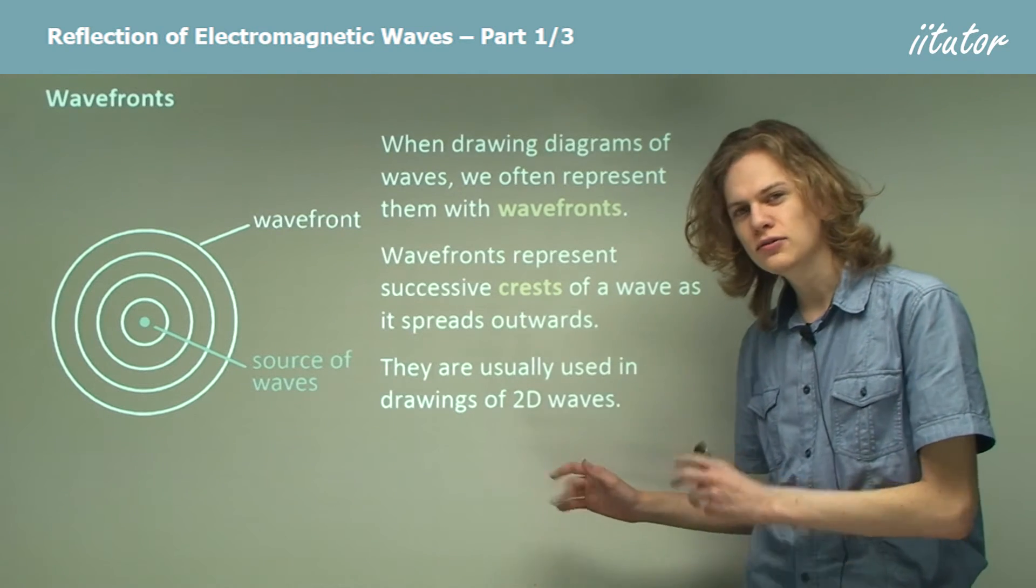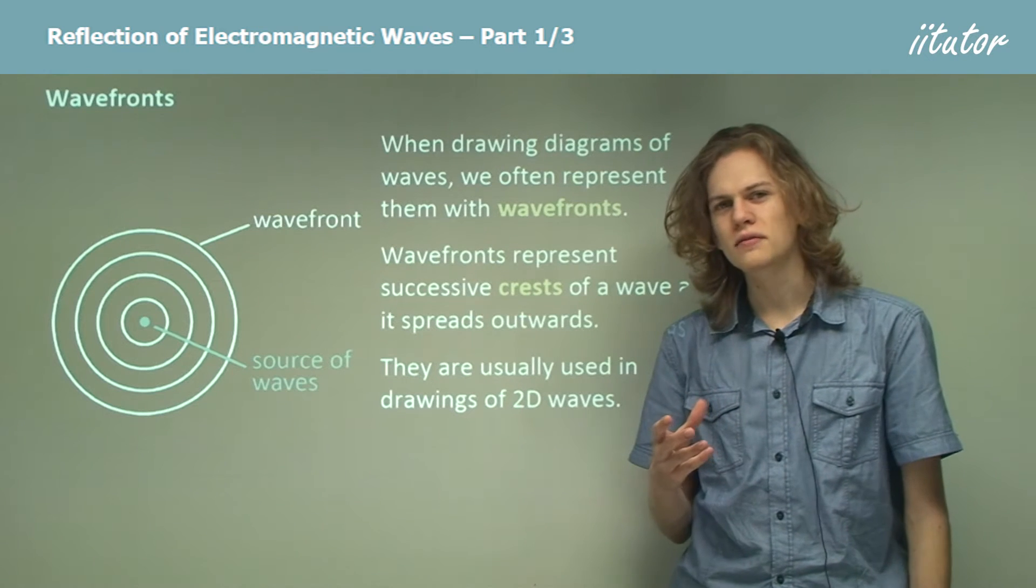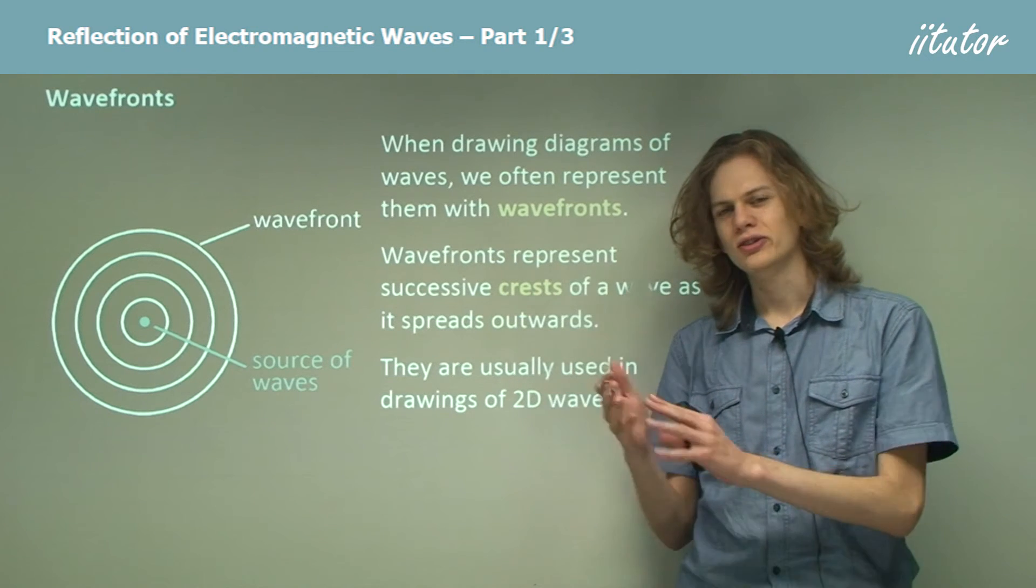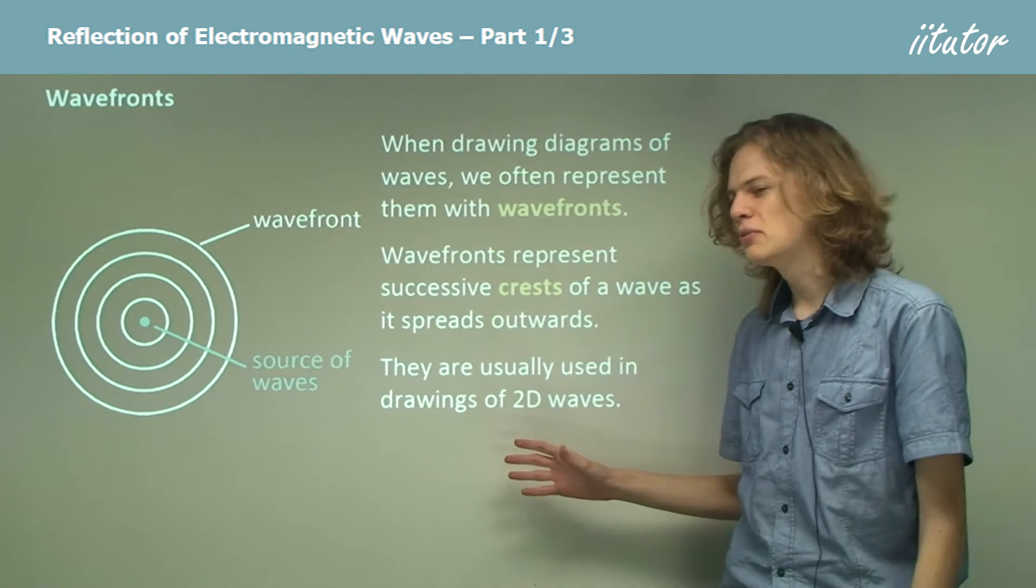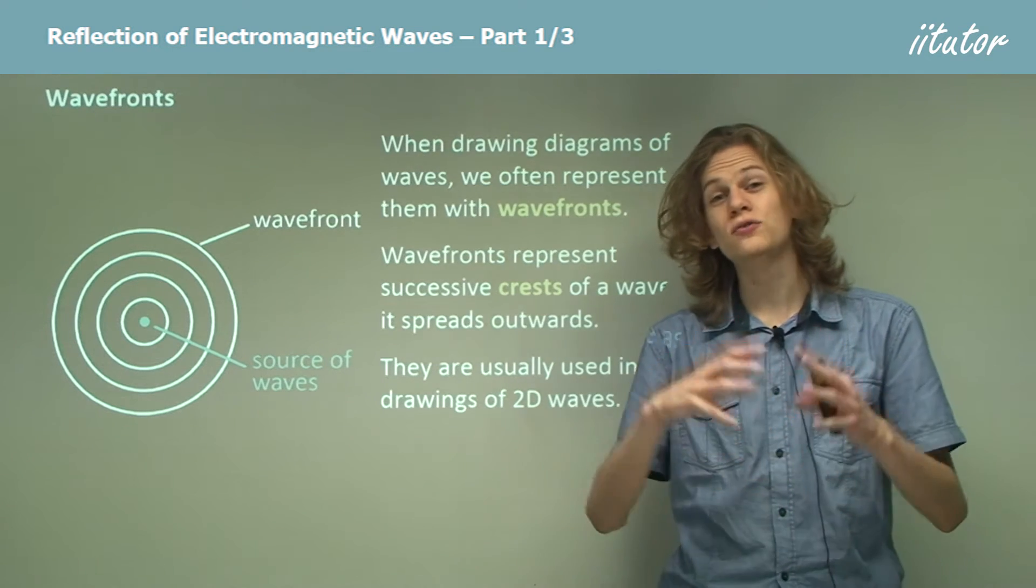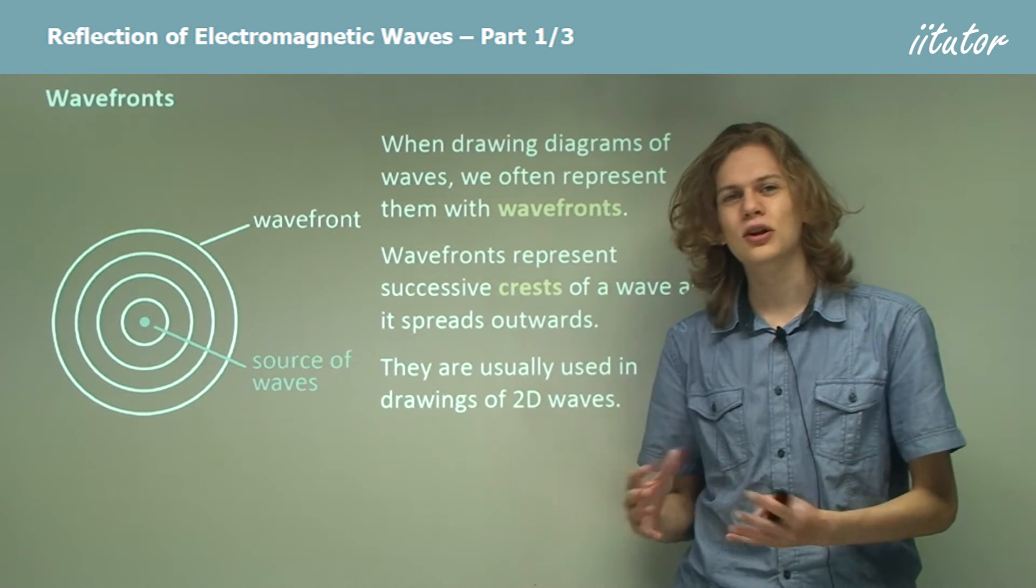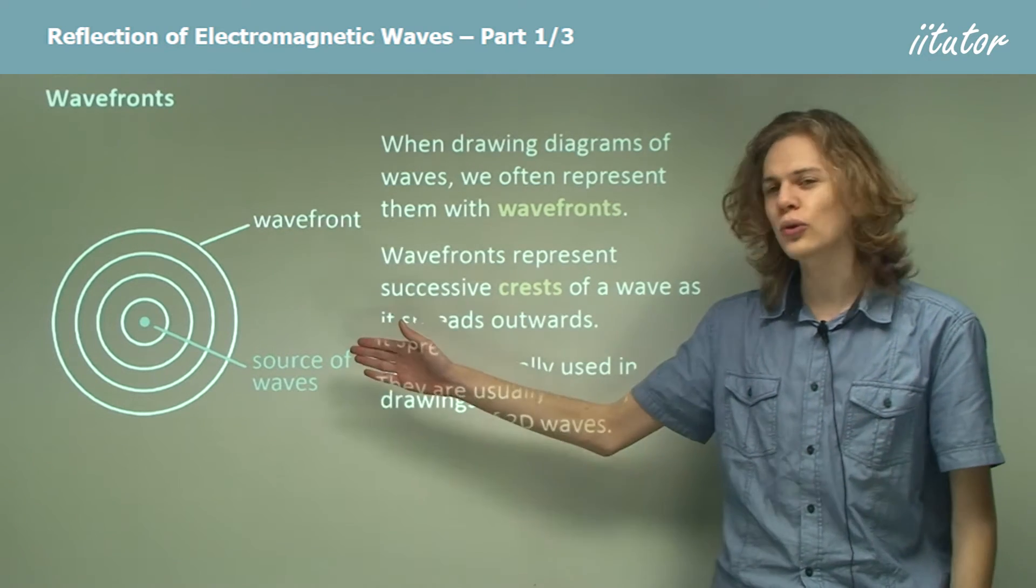So these are usually used in 2D waves because in one-dimensional waves, the wavefronts would just be dots or close together parallel lines, and in a three-dimensional wave, the wavefronts would in fact be spherical because a three-dimensional wave spreads out in all directions, not just in two directions.